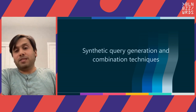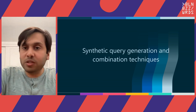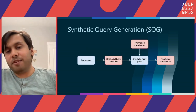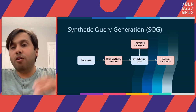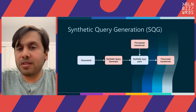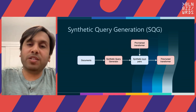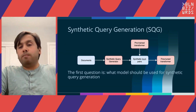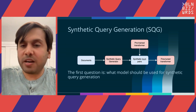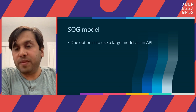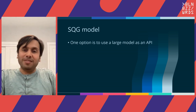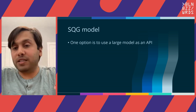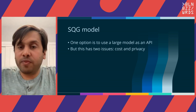This completes the puzzle: we have synthetic query generation for fine-tuning and combination techniques for combining them with BM25. For synthetic query generation, a set of documents comes in, the query generator creates synthetic queries, and we train a model on them. Two questions: what kind of synthetic query generator to use, and what kind of pre-trained transformer do we use for fine-tuning? For the query generator, one option is to use a large model as an API — this has become popular since last November. But there are two small issues: cost and privacy. Large model inference is expensive, and you probably don't want to send internal documents to an external API.